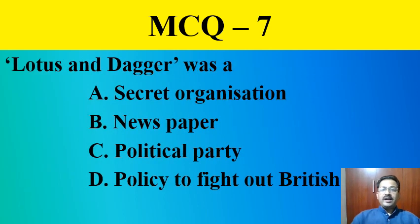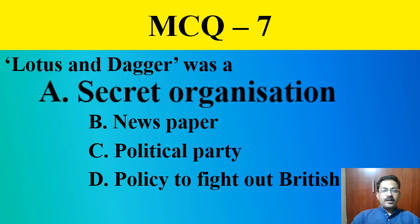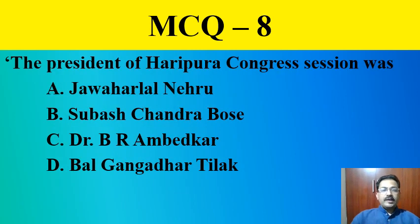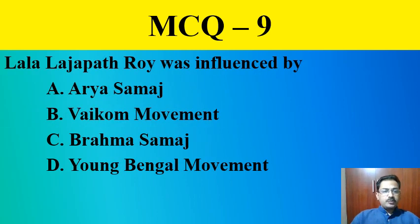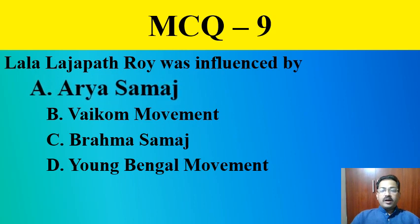MCQ question number seven: Lotus and Dagger was a — secret organization, newspaper, political party, or policy to fight the British. The correct answer is secret organization. MCQ question number eight: The president of the Haripura Congress session was — Jawaharlal Nehru, Subhash Chandra Bose, Dr. B.R. Ambedkar, or Bal Gangadhar Tilak. The correct answer is Subhash Chandra Bose. MCQ question number nine: Lala Lajpat Rai was influenced by — Arya Samaj, Vaikam movement, Brahma Samaj, or Young Bengal movement. The correct answer is Arya Samaj.